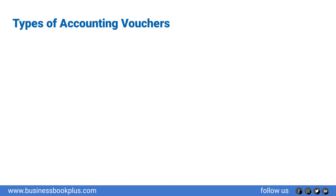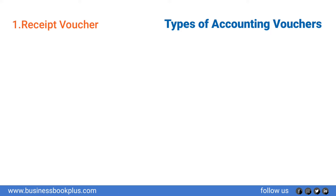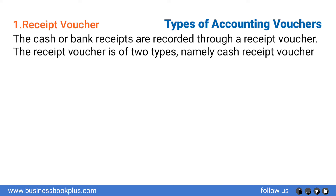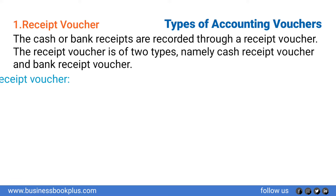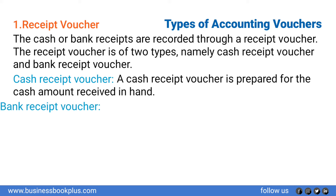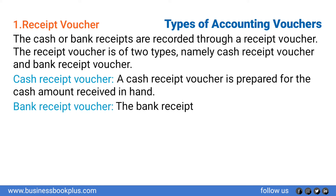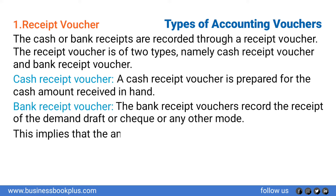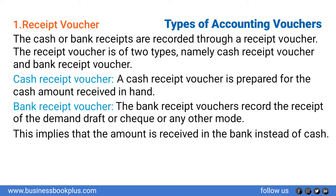Number one: Receipt Voucher. The cash or bank receipts are recorded through a receipt voucher. The receipt voucher is of two types: cash receipt voucher and bank receipt voucher. The bank receipt voucher records the receipt of the demand draft, cheque, or any other mode, implying that the amount is received in the bank instead of cash.